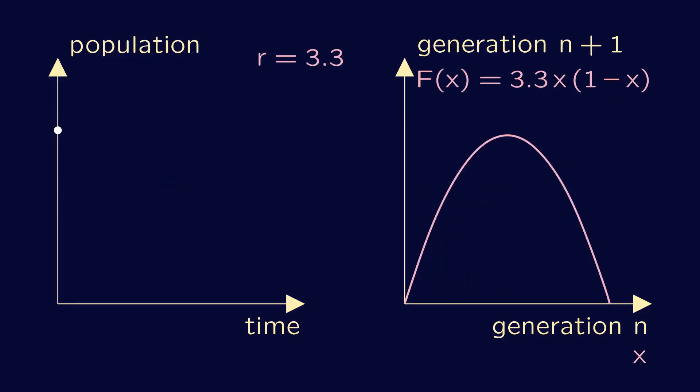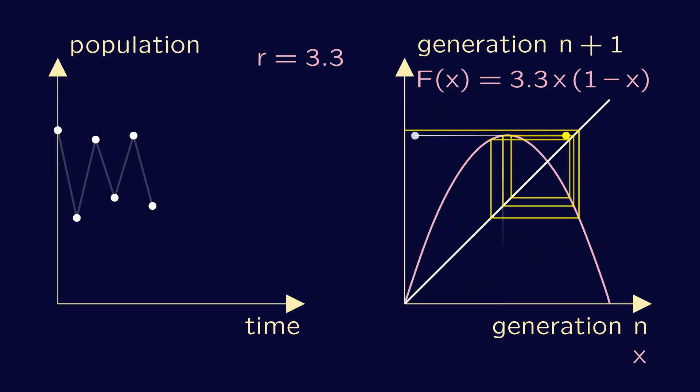If r is slightly more than three, then there isn't one stable population size. Instead, the iteration settles in an oscillation between two values. We say that such a pattern has period two, or call it two-periodic, because it repeats itself every two steps.